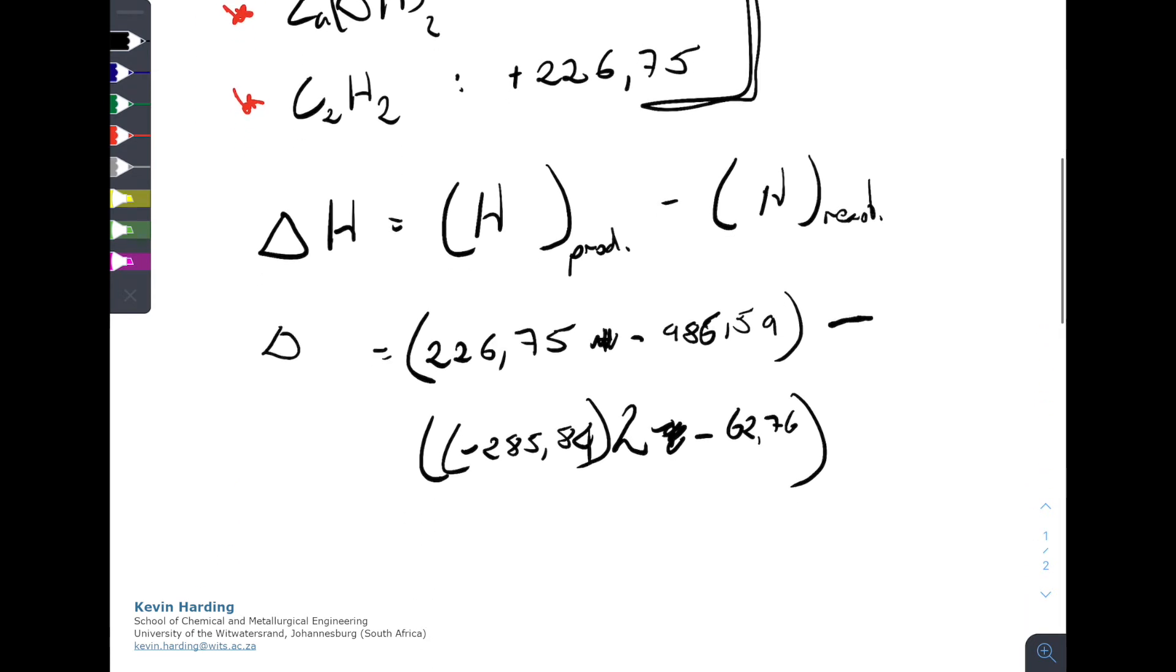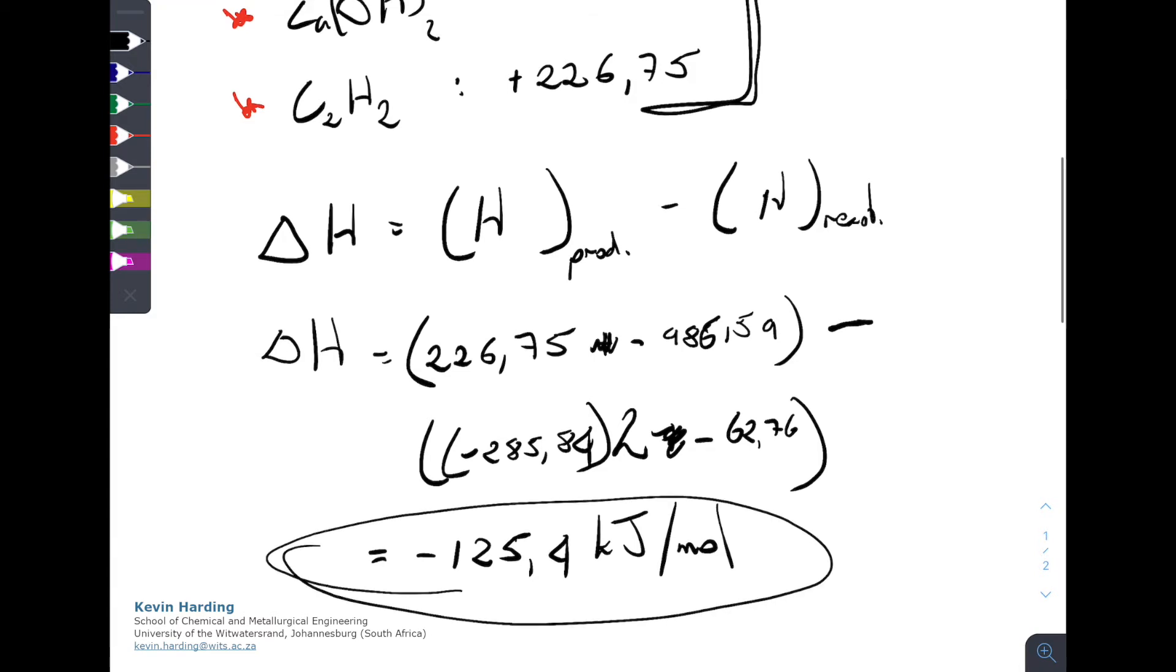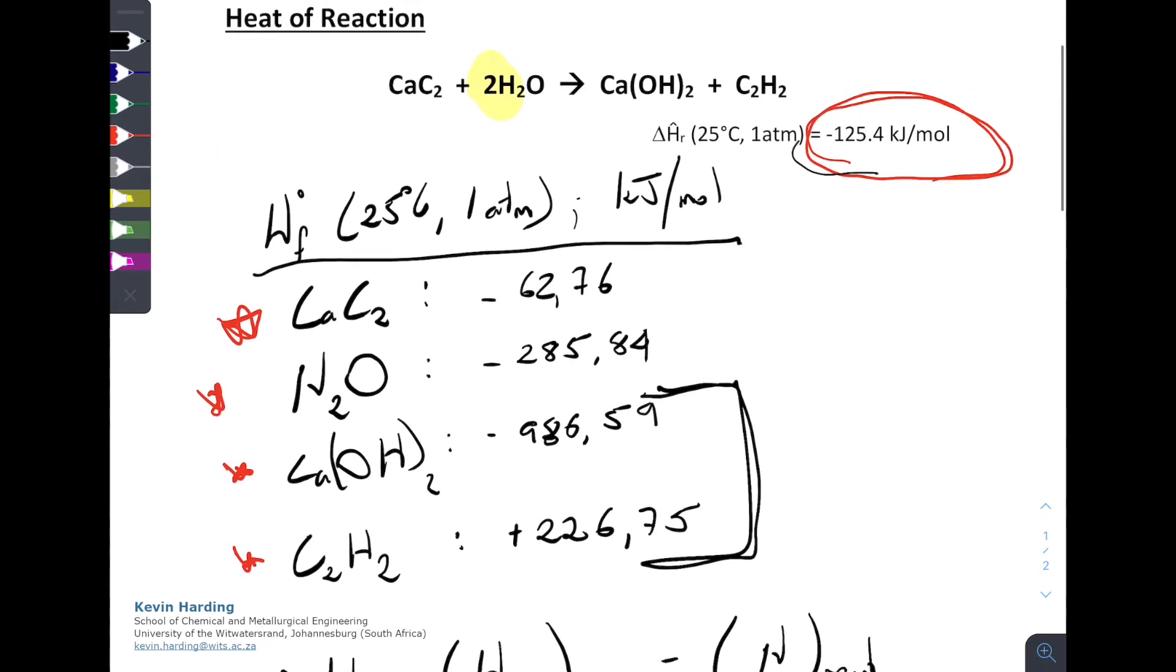So that change in enthalpy across that system, and remember this was all at 25 degrees Celsius for the products and the reactants, and it was 100% conversion. If I do this on a piece of paper next to us, the final answer on this is minus 125.4 kilojoules per mole. And if you look at that, that value there, 125.4 kilojoules per mole, is exactly the same value as we were given in a table before.